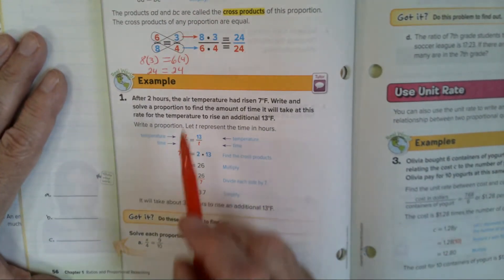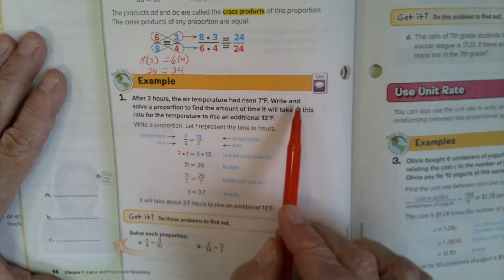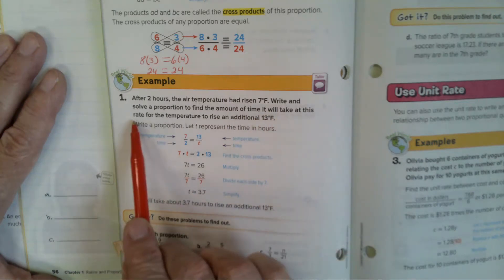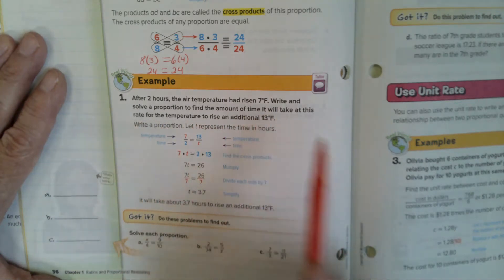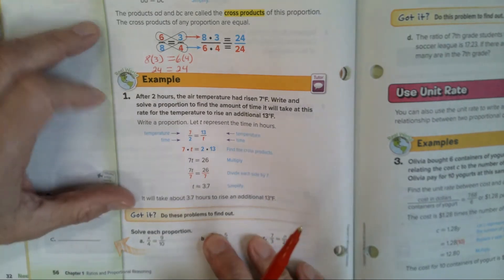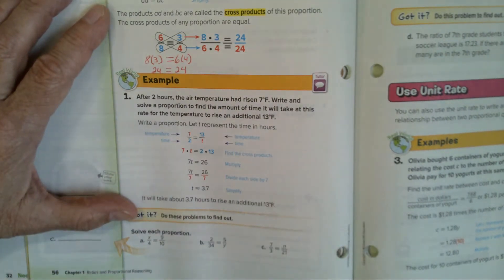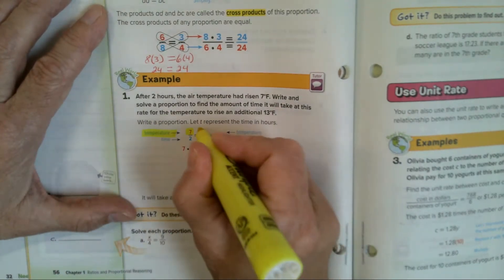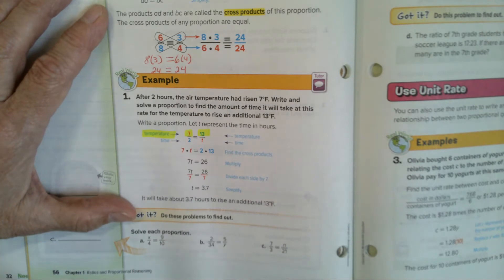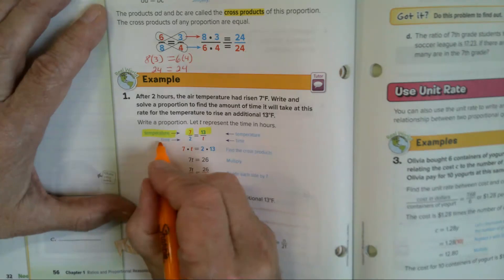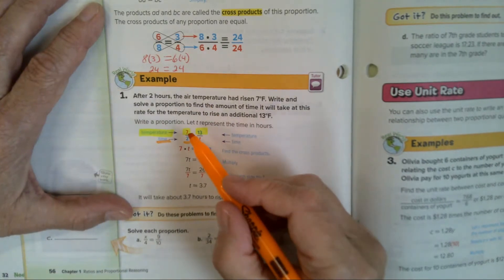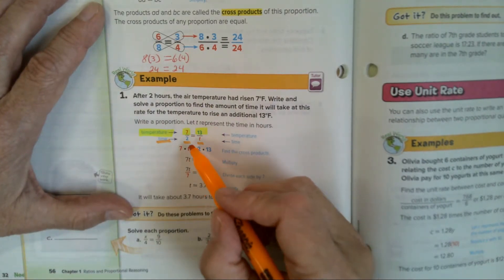In 2 hours, the air temperature has risen 7 degrees. Write and solve a proportion to find the amount of time it will take at this rate for the temperature to rise an additional 13 degrees. Now this is what's important: Labels. They put temperature on top. So this is a temperature and that's a temperature. So all the temperatures are on top and they put the time on bottom. Then you set up a proportion. You know that 7 over 2 equals 13 over T.